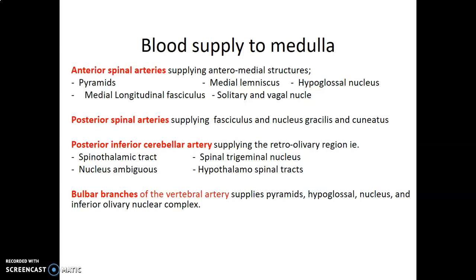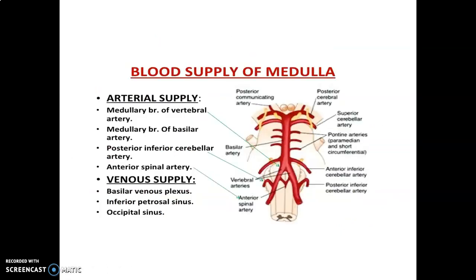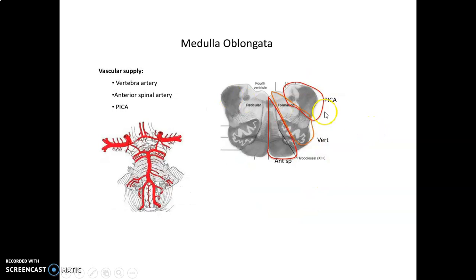Bulbar branches of the vertebral artery supply the pyramids, the hypoglossal nuclei, as well as the inferior olivary nuclear complex. Around the pyramids you have the anterior spinal artery, then medullary branches from the basilar artery — that's your posterior inferior cerebellar artery, which are branches of vertebral — and then anterior spinal arteries. Venous supply of the medulla is by the basilar venous system, the inferior petrosal sinus, and the occipital sinus. So the three vessels that supply the medulla: the anteromedial aspect by anterior spinal, the anterolateral by vertebral, and posteriorly the posterior inferior cerebellar artery.